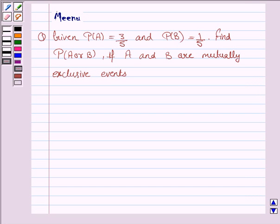Hello and welcome to the session. Let us discuss the following question. It says, given probability of A is 3 by 5, probability of B is 1 by 5, find probability of A or B if A and B are mutually exclusive events.